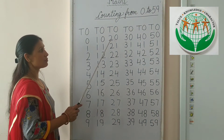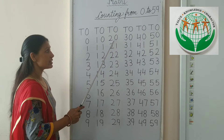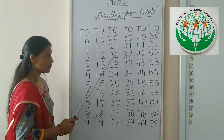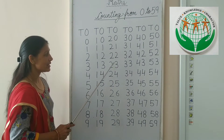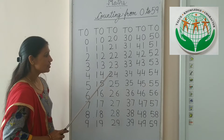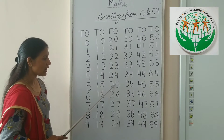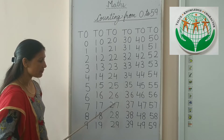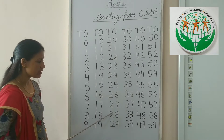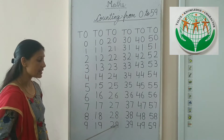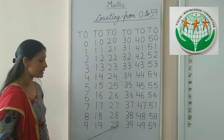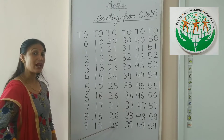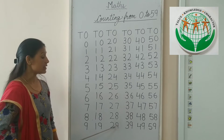So start the counting from 20: 20, 21, 22, 23, 24, 25, 26, 27, 28, 29. Yes. And now tell me, what comes after 29?